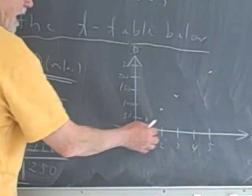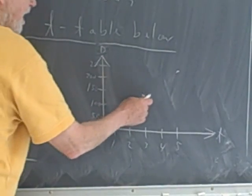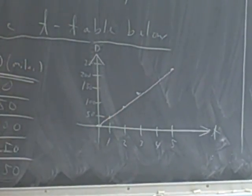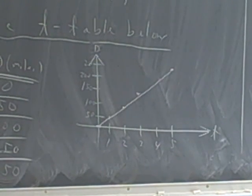I've got it plotted here. This is time, and this is distance, and I've got the points. As you can see, they line right up. That makes life pretty easy because what we have here is a line.